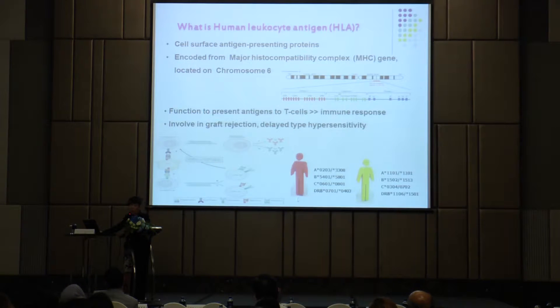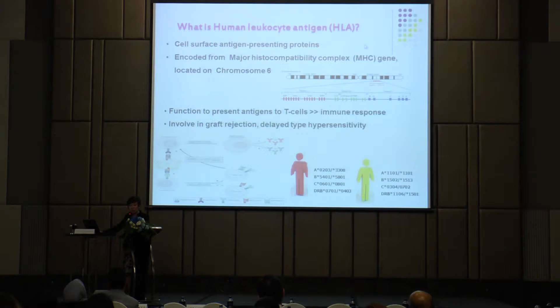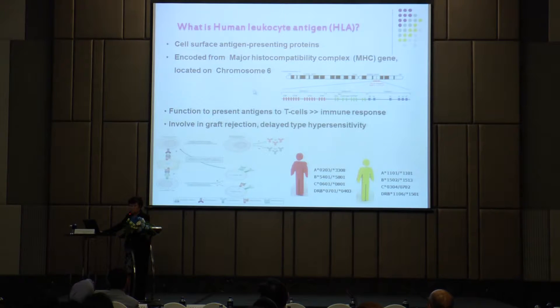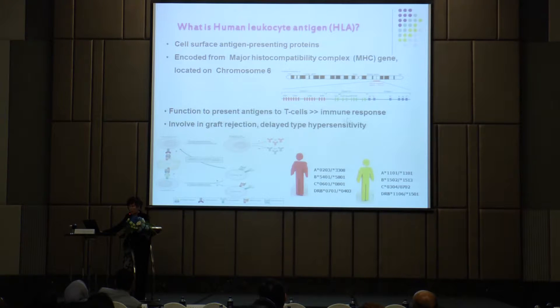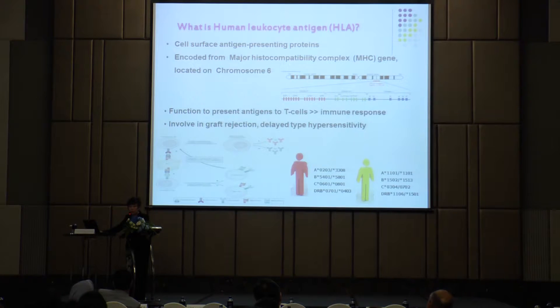We've been talking about HLA for several hours, but let me clarify what HLA actually is. HLA is a gene that everyone contains—it exists in every person, not only those who will develop Stevens-Johnson syndrome. It is the cell surface antigen-presenting protein encoded by the MHC gene located on chromosome 6. The function of HLA is to present antigen to the T cell, after which an immune reaction can occur. So everyone must have HLA, otherwise we would die from infection. The problem is that each of us carries different alleles of HLA.